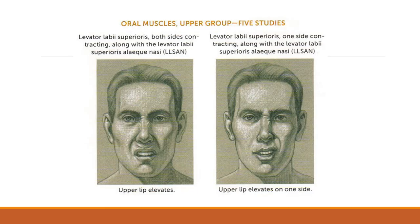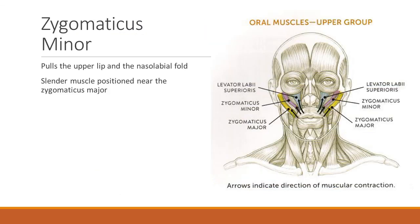Oral muscles — upper group studies. Where the upper lip elevates, it might look like someone just smelled something bad or has a bad taste in their mouth. On the right side, where only one side of the upper lip elevates, it's kind of a confused face — 'what's going on here?' The levator labii superioris, zygomaticus minor, and zygomaticus major all contribute. The zygomaticus minor pulls the upper lip and the nasolabial fold — a slender muscle positioned near the zygomaticus major.